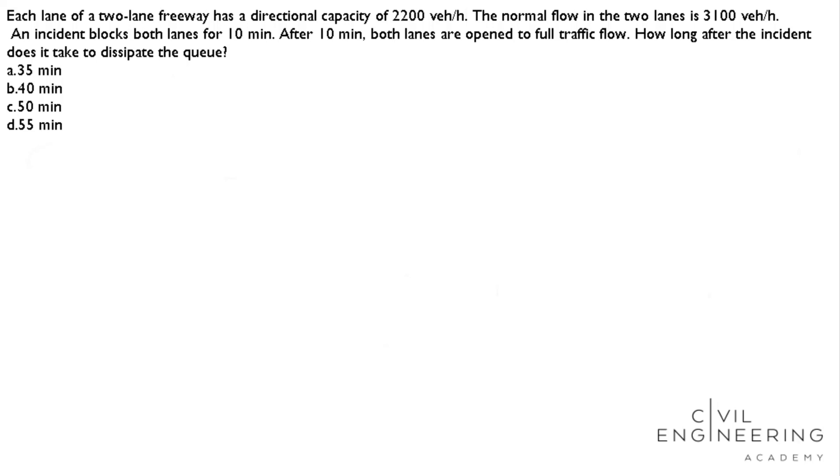So here we have to calculate the time T in minutes. First, I'm going to calculate total capacity for two lanes. If we denote our capacity C, C equals 2200 times 2 divided by 1 hour, which means 60 minutes.